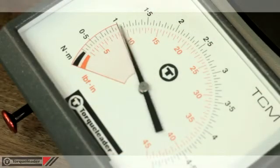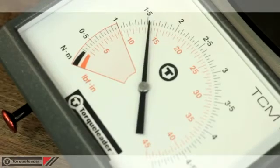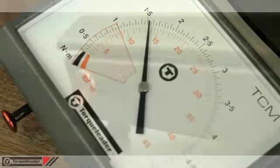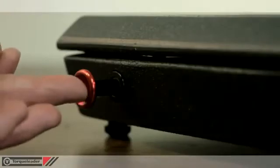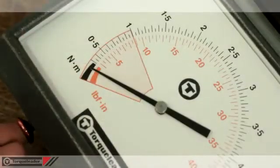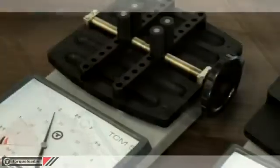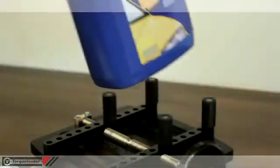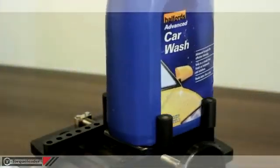The large dial features a peak torque pointer which remains at the maximum torque achieved. This is reset to zero using the button at the front of the unit. A choice of two clamping tables are available.